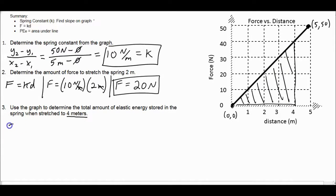So the area is going to be one half of the base times the height because it is a triangle. So one half of the base, the base is 4 meters times the height, and at 4 meters we are about 40 newtons. So half of 4 is 2, and 2 times 40 is 80, and we get newton meters, which ends up being joules. So our amount of elastic energy, our elastic potential energy is 80 joules.